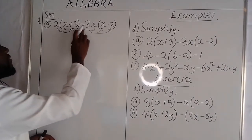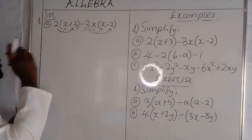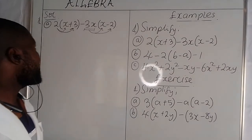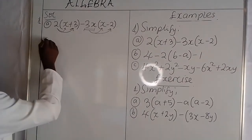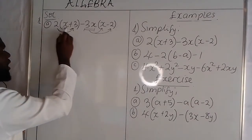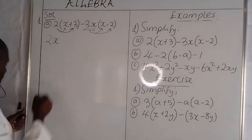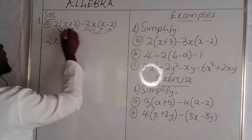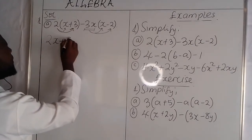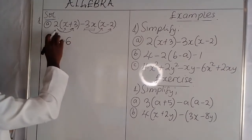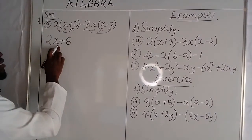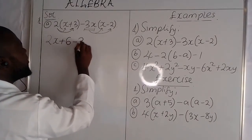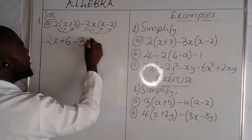We shall say negative 3x by x, by negative 2. This is how we are supposed to proceed whenever we meet such a case. So 2 by x gives us 2x, and 2 by 3 gives us positive 6. Then we have negative 3x by x, which gives us negative 3x squared.